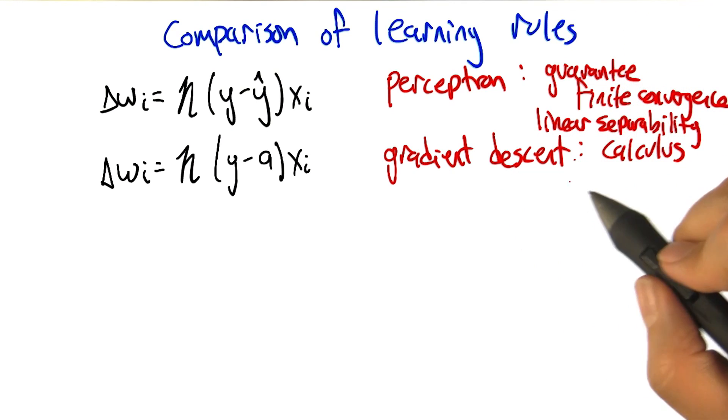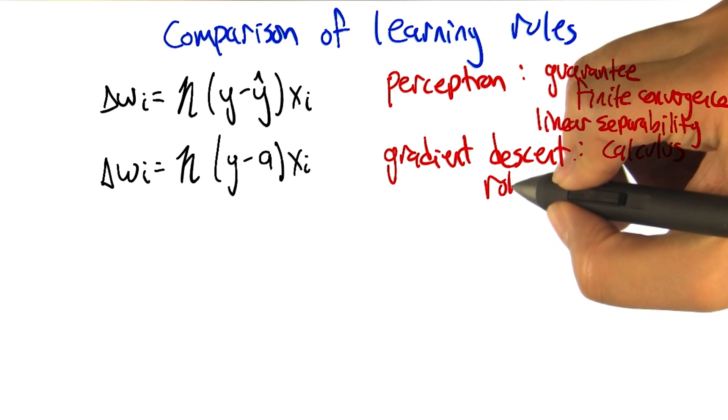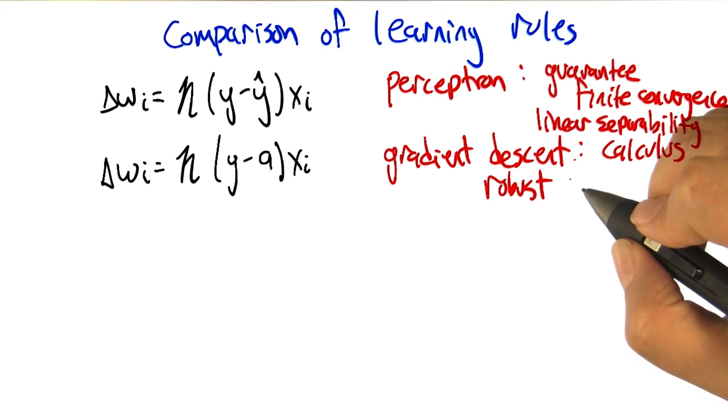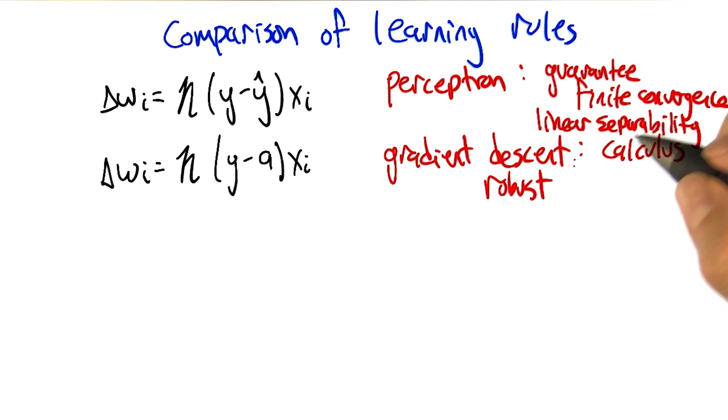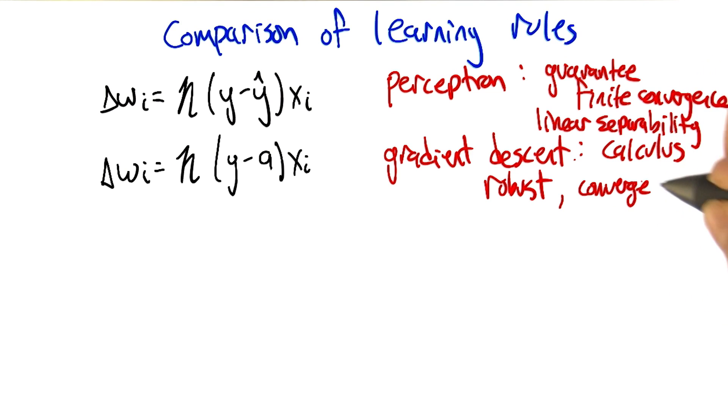Whereas the gradient descent rule is good because, you know, calculus. I guess that's not really an answer is it? The gradient descent rule is good because it's more robust to datasets that are not linearly separable. But it's only going to converge in the limit to a local optimum.